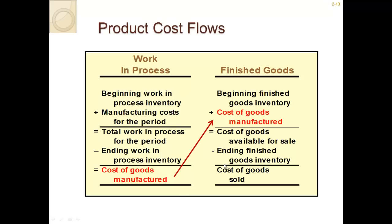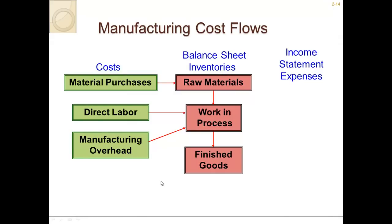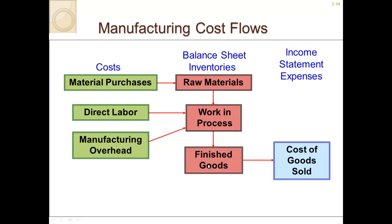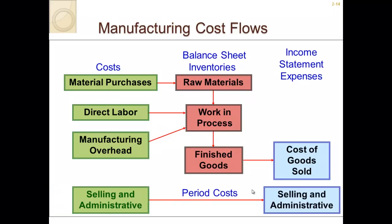It seems like a lot of terminology right now, but we will work through examples on how to actually calculate it. In terms of manufacturing cost flows: raw materials, direct labor, and manufacturing overhead all flow into work in process, which is a balance sheet inventory item. That work in process then flows into finished goods, and once goods are sold, that cost flows to cost of goods sold, which becomes an income statement expense item. All period costs go directly to the income statement as expenses.